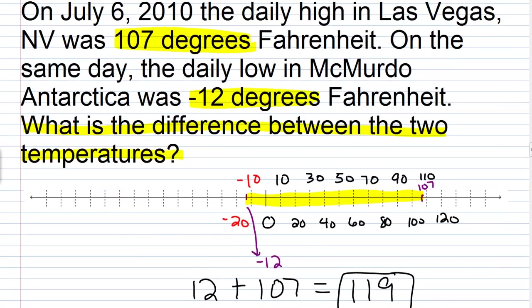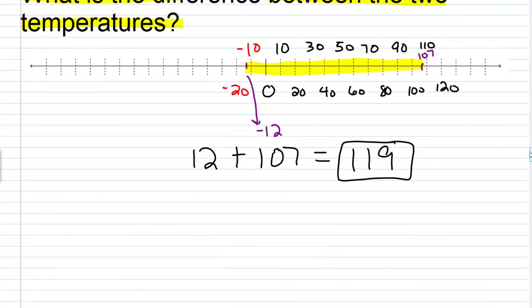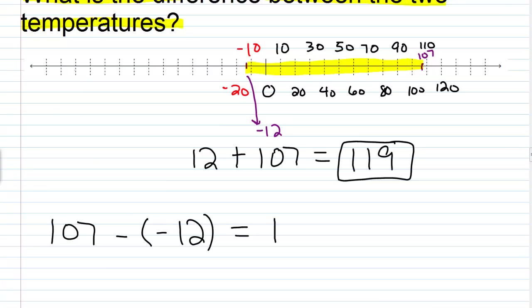If we think about this in terms of the word 'difference,' you're always going to be thinking subtraction. What you have here is the difference between 107 and negative 12. So to find this, we're doing 107 minus a negative. And remember, whenever you subtract away a negative, it's like adding a positive. So this is really equal to 107 plus 12, which again is 119.